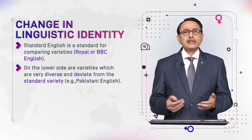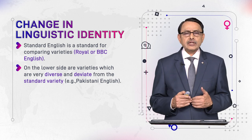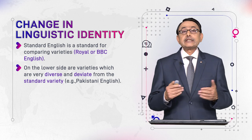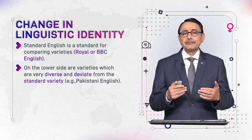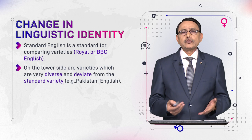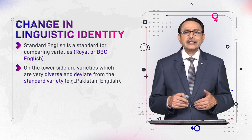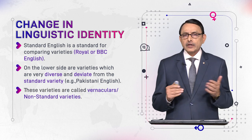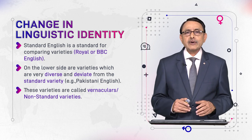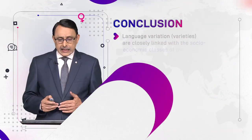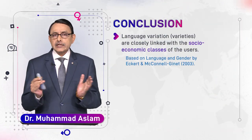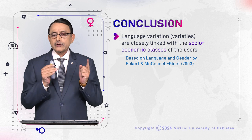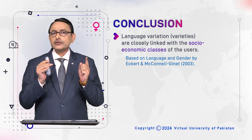On the other side of the hierarchical market lies the vernacular — the variety spoken by non-elite people, whether middle class or working class. For example, if we take UK English as standard English, then Pakistani English is a non-standard variety of English. These varieties are called non-standard varieties, or vernaculars. We conclude that language variation and varieties are closely linked with the socio-economic classes of the users of that variety.